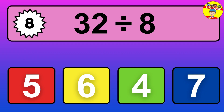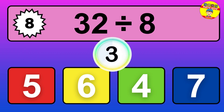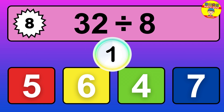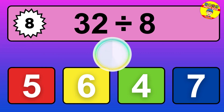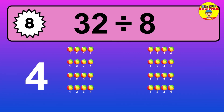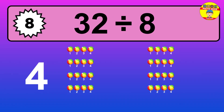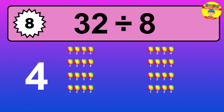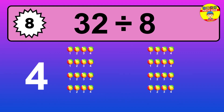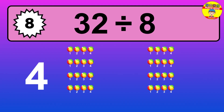32 divided by 8 — it's time to think. Let's go to the solution. Divide the number 32 by 8. Each group contains 8 units, so dividing 32 by 8 results in 4 equal groups. Thus, the result is 32 divided by 8 equals 4.